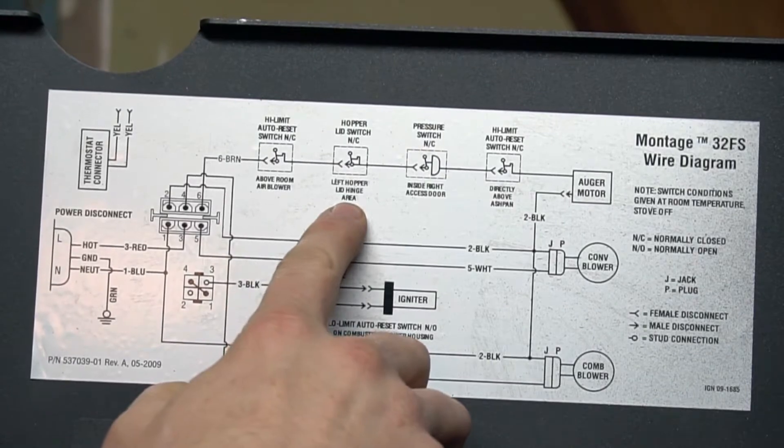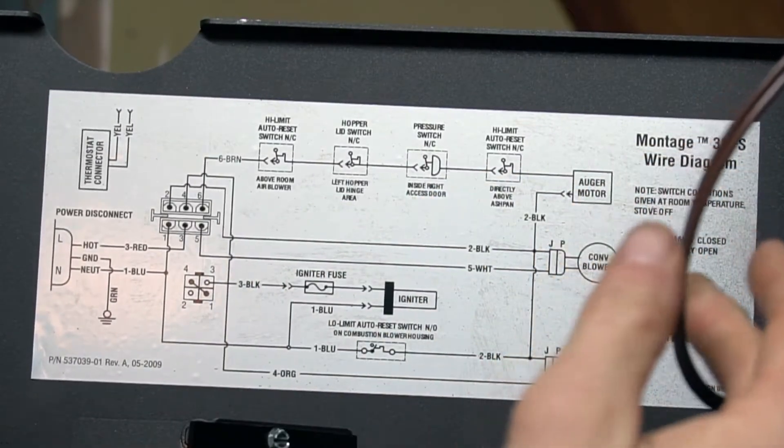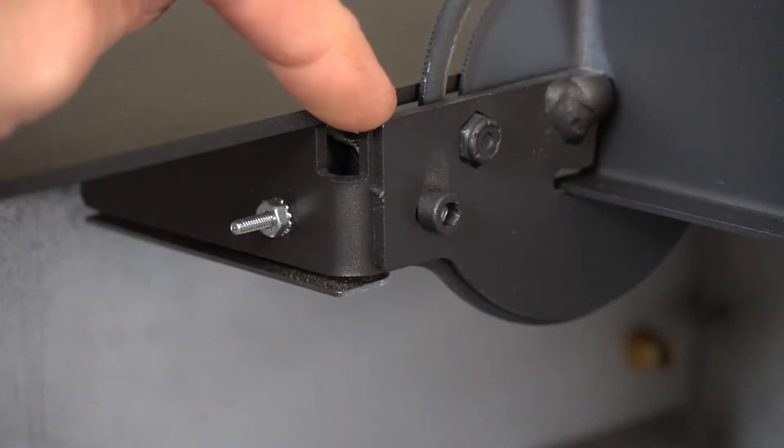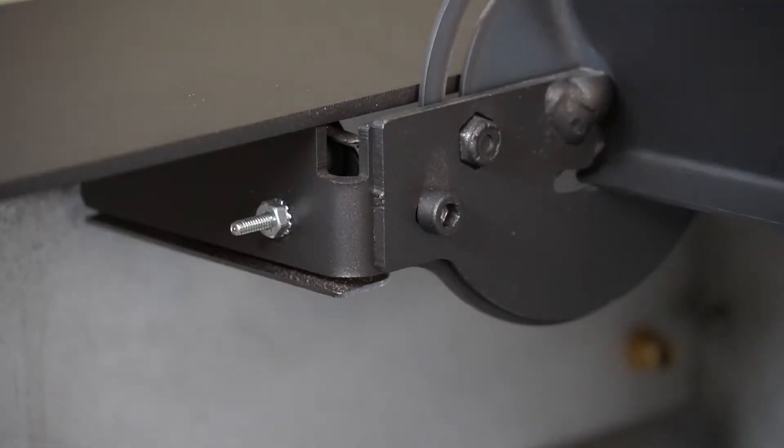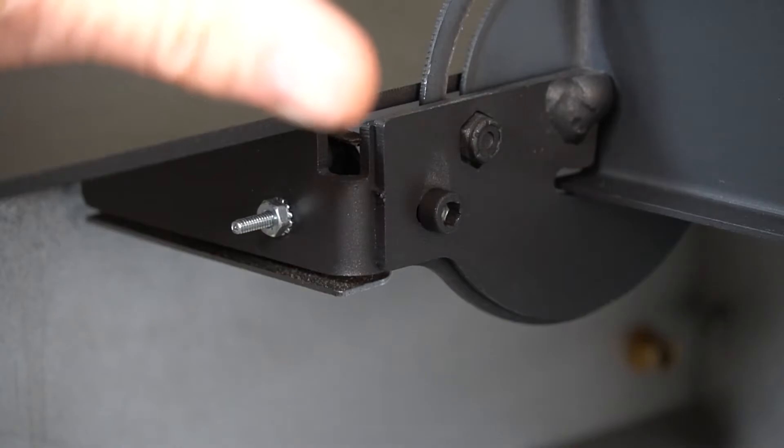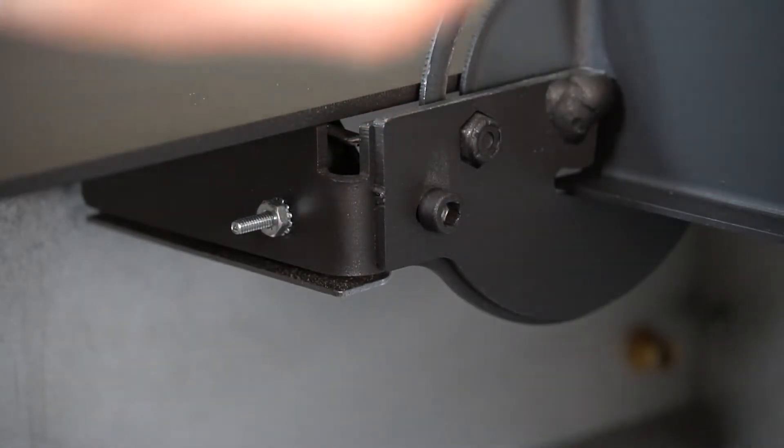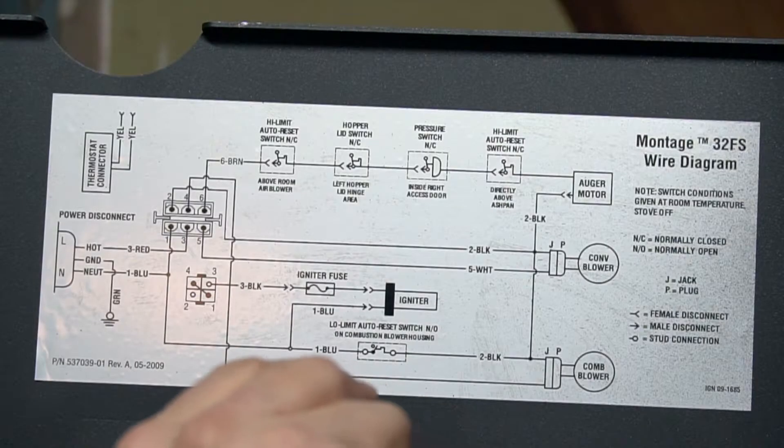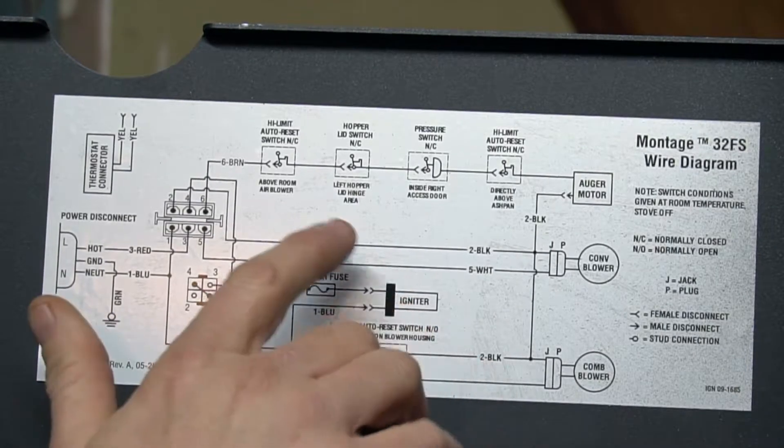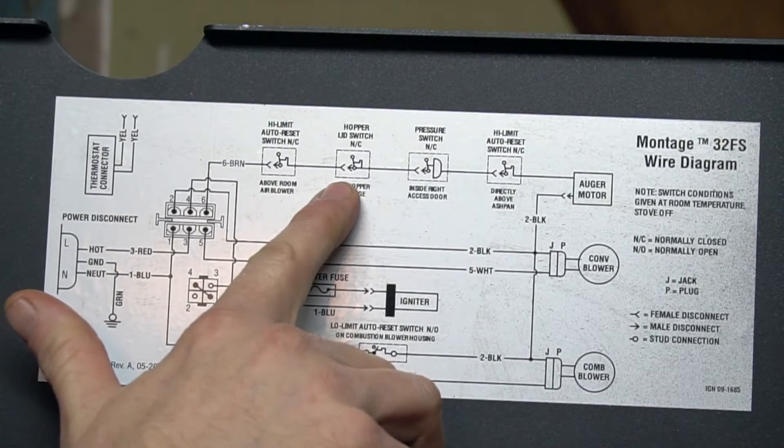Next is going to be the hopper lid switch. And that's these brown wires right here. The hopper lid, if it's open, it's going to open the circuit and it's going to cut off the feed. And because pellets actually go in there, that can be something that can get damaged if you put too many pellets in and it kind of crushes it down, or if a pellet is on top of the switch, on top of the little arm, underneath the arm so it can't depress. That can take your feed circuit out.